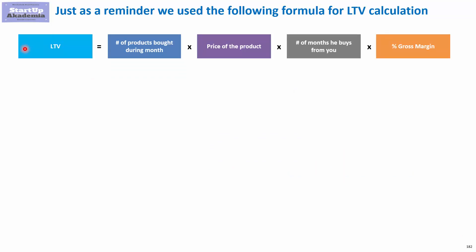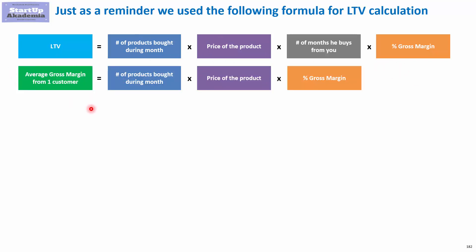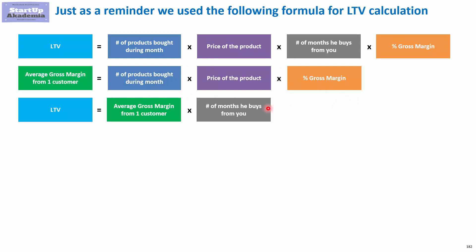As you might remember, we calculated lifetime value by multiplying four elements: number of products bought during the month, price of the product, number of months he buys from us, and percentage gross margin. The first two and the last one are actually our average gross margin from one customer. So if we multiply number of products bought during the month, the price of an average product, and the percentage gross margin, we get exactly how much he generates for us every month. In other words, the lifetime value can be expressed as a multiplication of average gross margin from one customer and number of months during which he buys from us.